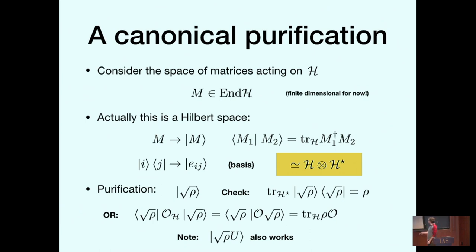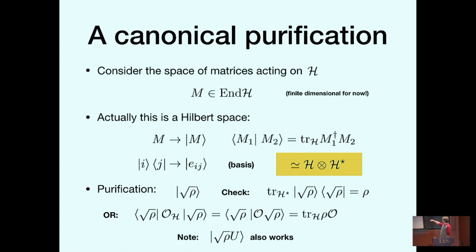We're thinking of this matrix as a vector in a Hilbert space, so it's a pure state. You can check that if I trace over H*, I get back to my original density matrix. A better way to think about this: observables in the original Hilbert space should have all the same one-point functions — that's another property of a purification. Observables in this new Hilbert space are given by the left action of operators on these matrices, and taking the inner product gives the one-point functions of the original operators. This is indeed a purification, and it also works if I apply a unitary to the right.